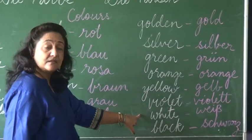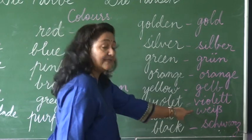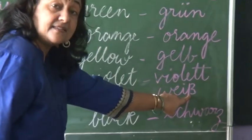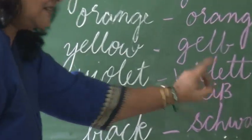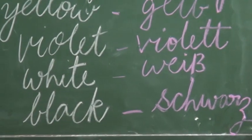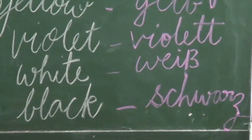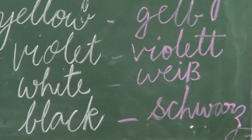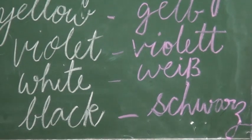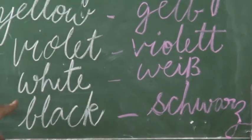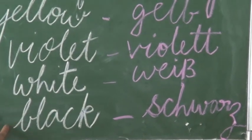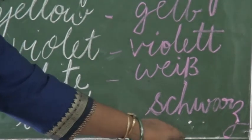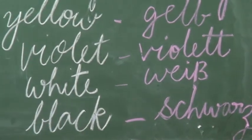White is Weiß. Here we have the ß (eszett) and it is pronounced as double-S, so it sounds like 'Weiß' — this sounds like W-I-S-E in English. Next, we have Black — Schwarz.